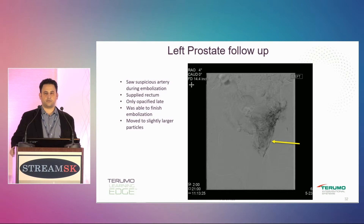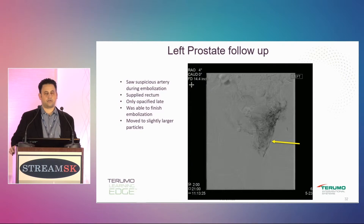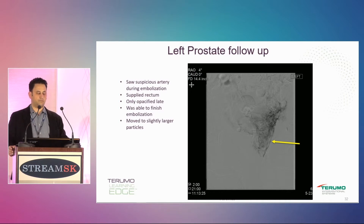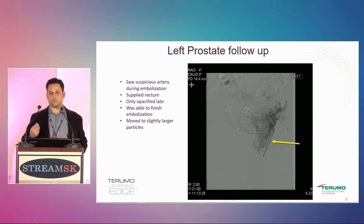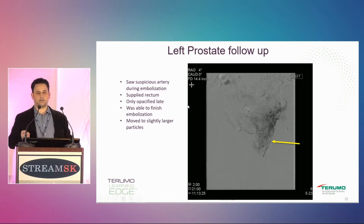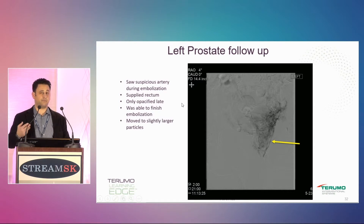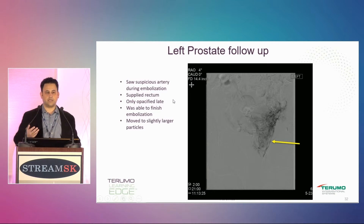Here's an important point that wasn't talked about much yesterday. Partway through the injection I saw something suspicious — a straight artery going too far down past the symphysis that did supply the rectum, appearing only late. We were able to finish the embolization going pretty slow. I moved to slightly larger embolics. I don't have as much fear about refluxing some beads into the middle rectal artery — the rectum is pretty tough and can take a little non-target embolization.